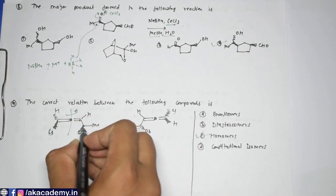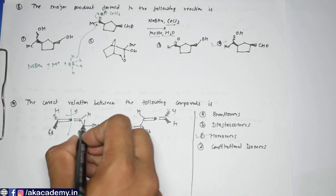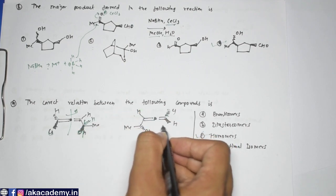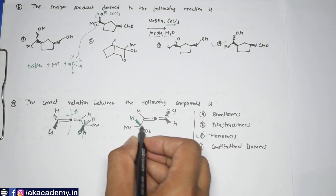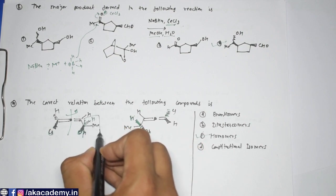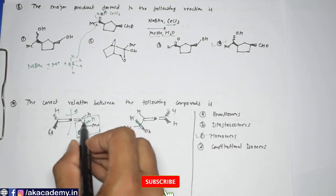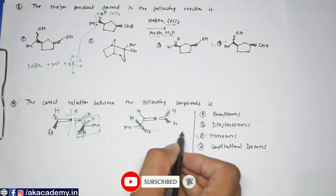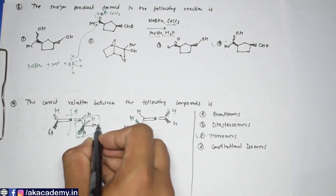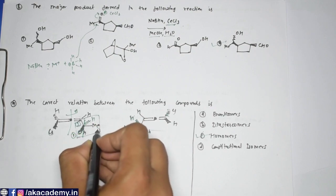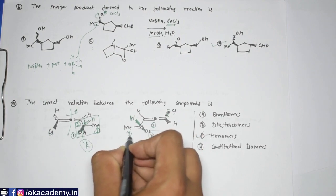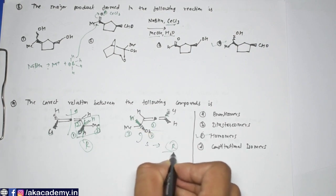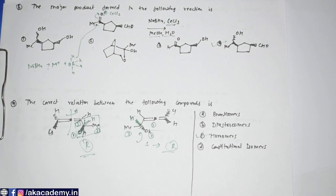If you're not confident from rotation, you can assign R/S configuration at each chiral center. With hydrogen below the plane at one center and above at the other, assigning priorities gives R at one position and S at the other — but correcting for hydrogen being above the plane, both centers turn out to be R. So both compounds are R, confirming they are homomers.